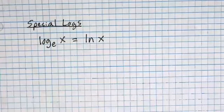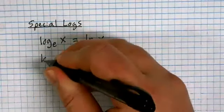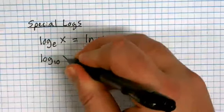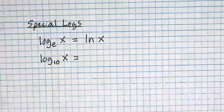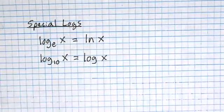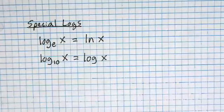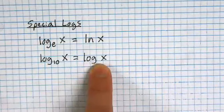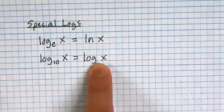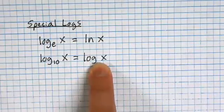There's another special log we abbreviate — the other base is 10. How do we abbreviate a log base 10? We just leave out the base. Like with the square root — we never write the 2 inside the radical; we assume if there's no index it's a square root. Same with log: if we don't see a base written down, we assume the base is 10. There's a good reason for that — we count in base 10.